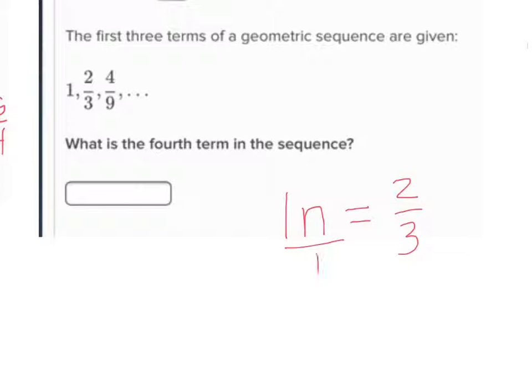And so we're saying 1 was multiplied by some number n, and the result was 2 thirds, right? And so we can divide 1 on both sides, and so n equals 2 thirds. That's what each term is being multiplied.